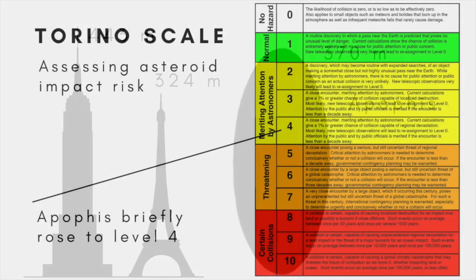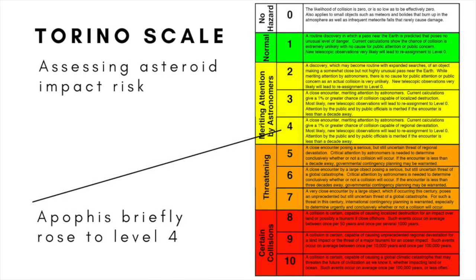For a while, Apophis was given an all-time high rating of 4 on the Torino Impact Hazard Scale, a 0-10 scale that indicates the likelihood and severity of asteroid impacts.